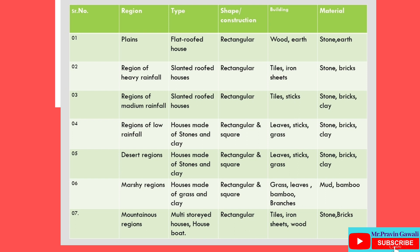First region: Plains. Type: flat-roofed houses. Construction: rectangular. Building material: wood, earth and stone.